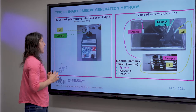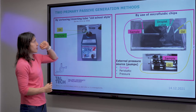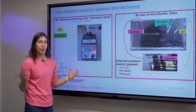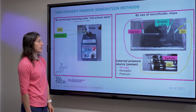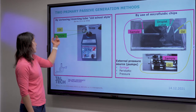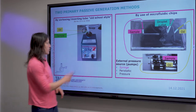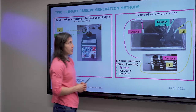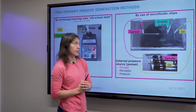The two main ways to form droplets passively are either by vortexing or inverting a tube — sort of the old school style. You don't need really any equipment for that, maybe just a vortexer. If you have oil and your sample in a tube, you just use the vortexer to make your droplets. The other, more complex way, is to use some kind of microfluidic chip.